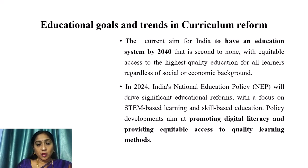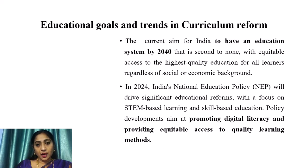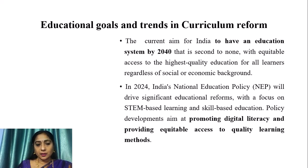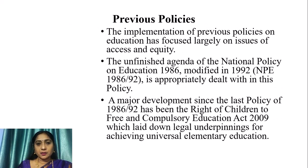Let us discuss educational goals and trends in curriculum reform. The current aim for India is to have an education system by 2040 that is second to none, with equitable access to the highest quality education for all learners regardless of social or economic background. In 2024, India's National Education Policy (NEP) will drive significant education reforms with a focus on STEM-based learning and skill-based education, promoting digital literacy and equitable access to quality learning methods.